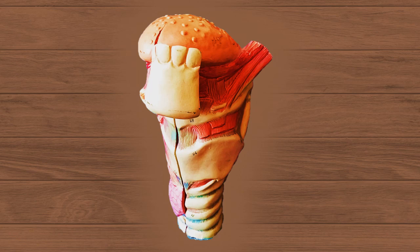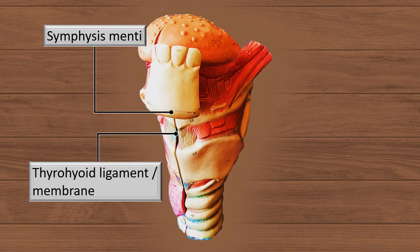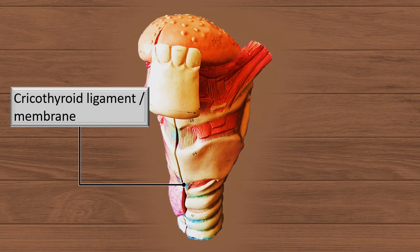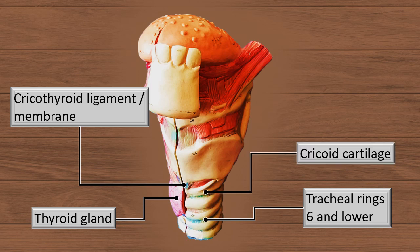This model gives a summarized tour of all the structures we have seen in the dissection. Starting with symphysis menti, thyrohyoid ligament and the membrane, of course the hyoid bone, then thyroid cartilage, then cricoid cartilage and the cricothyroid membrane and cricothyroid ligament, then the thyroid gland, then the tracheal rings. Remember: tracheal rings 1 and 2 are above the isthmus; 6 and below are below the isthmus of the thyroid gland. And of course, cricoid cartilage to complete the discussion.